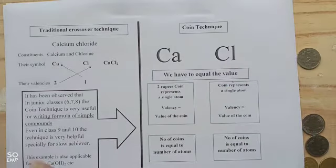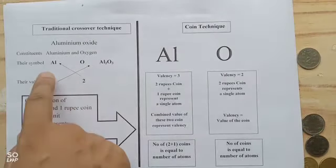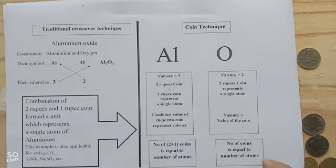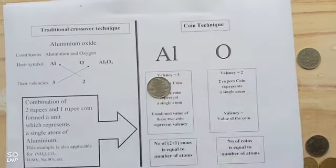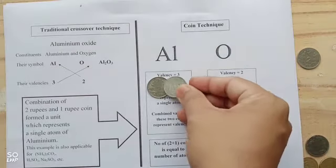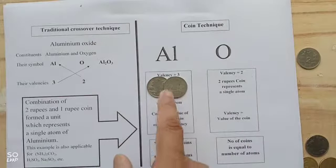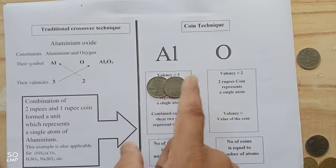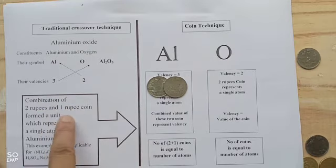Aluminum oxide. In the traditional method, aluminum has valency 3, oxygen has valency 2, so Al2O3. Now, we don't have a 3 rupees coin, but we can make it. We take one 2 rupees coin and one 1 rupee coin and place one above another. Together they form a unit. That unit represents valency 3 (2 plus 1 equals 3), and we consider it a single unit. The combination of 2 rupees and 1 rupee coins forms a unit representing a single atom of aluminum.